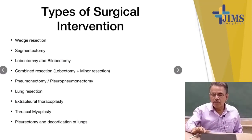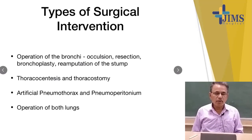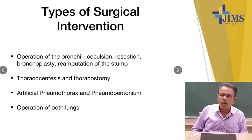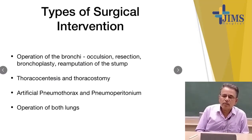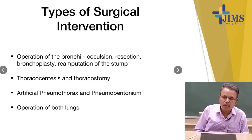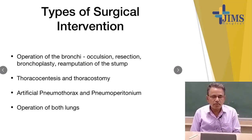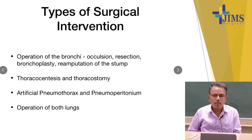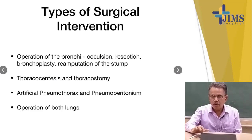Types of surgical intervention for TB: wedge resection, segmentectomy, lobectomy or bilobectomy, combined resection (lobectomy plus minor resection), pneumonectomy, pleuropneumonectomy, extrapleural lung resection, thoracoplasty, thoracomyoplasty, pleurectomy, and decortication of the lung. Operations on the bronchi include occlusion, resection, bronchoplasty, reamputation of the stump, thoracosynthesis, thoracostomy, artificial pneumothorax, pneumoperitoneum, and operations on both lungs.